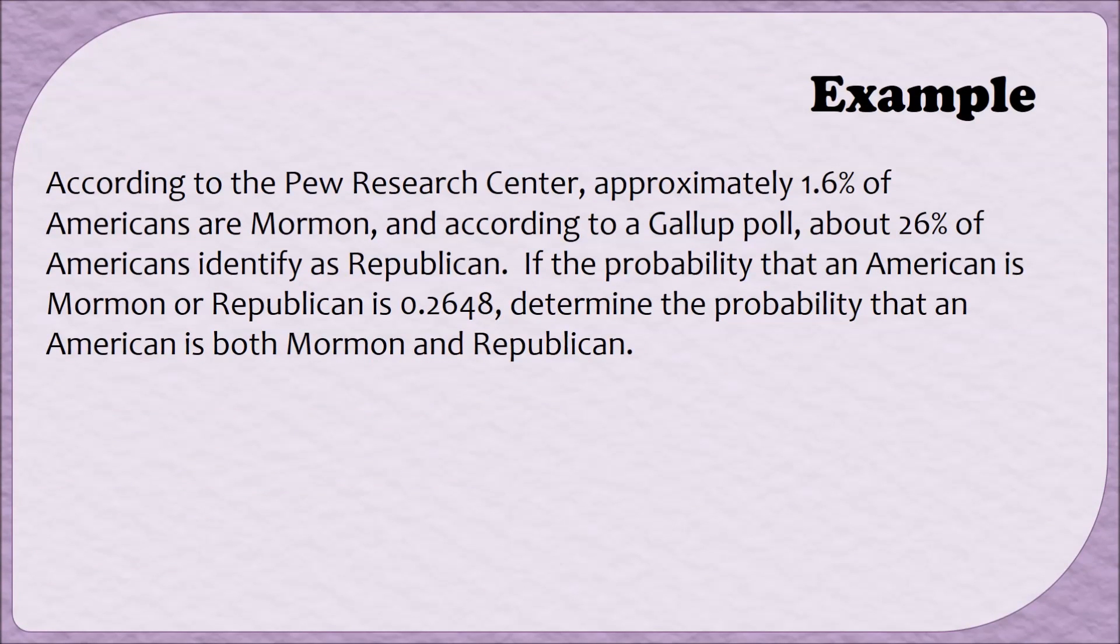According to the Pew Research Center, approximately 1.6 percent of Americans are Mormon, and according to a Gallup poll, about 26 percent of Americans identify as Republican. If the probability that an American is Mormon or Republican is 0.2648, determine the probability that an American is both Mormon and Republican. Before we begin this example, I strongly recommend that we write down a summary of information given to us. If you'd like practice in writing your own summary, please pause the video here. When you finish summarizing your information, you can unpause the video and check your work against my work.